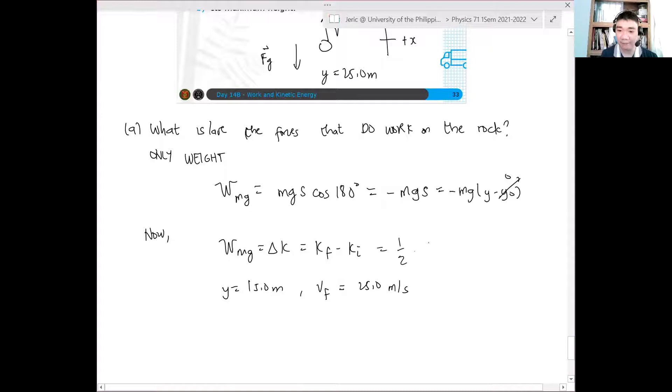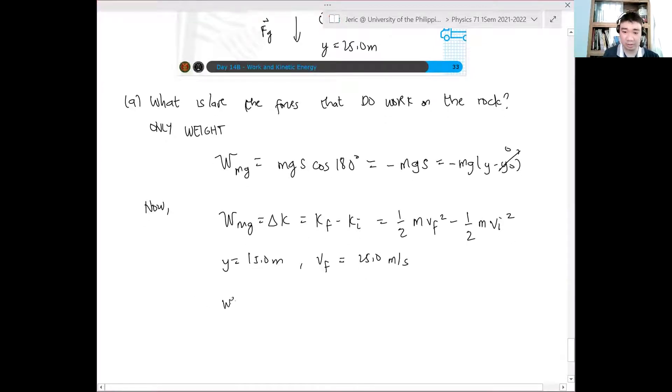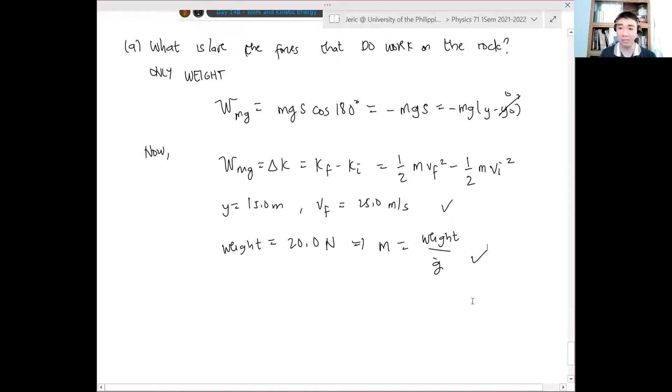So this is just equal to one half m vf squared minus one half m vi squared. Now, given din yung total weight. The total weight is equal to 20.0 newtons. So I can determine the mass of the object and say that mass is just equal to the weight over g.